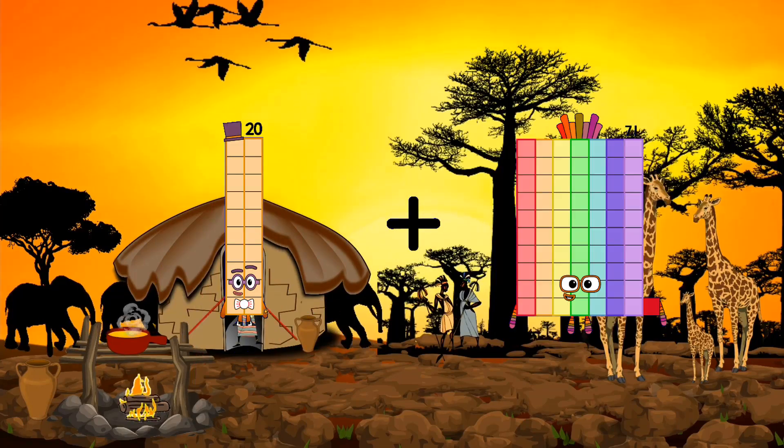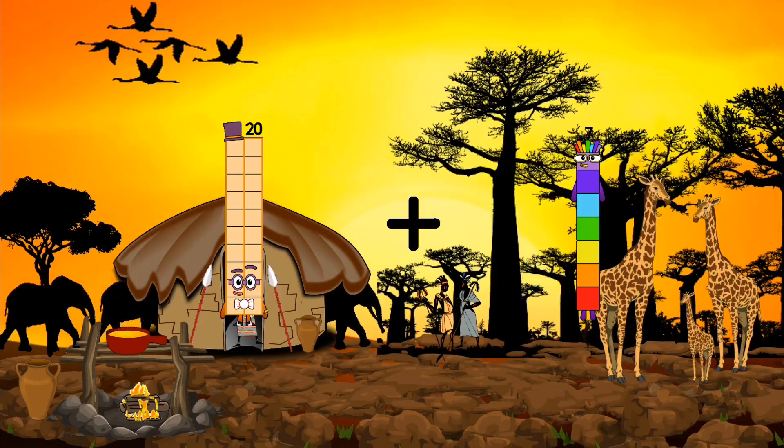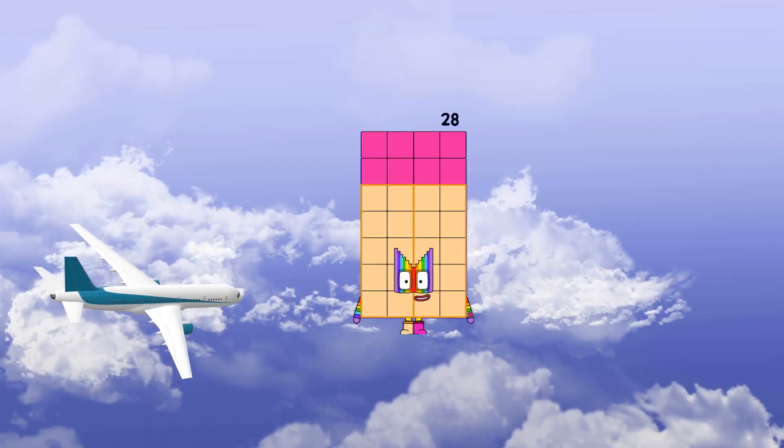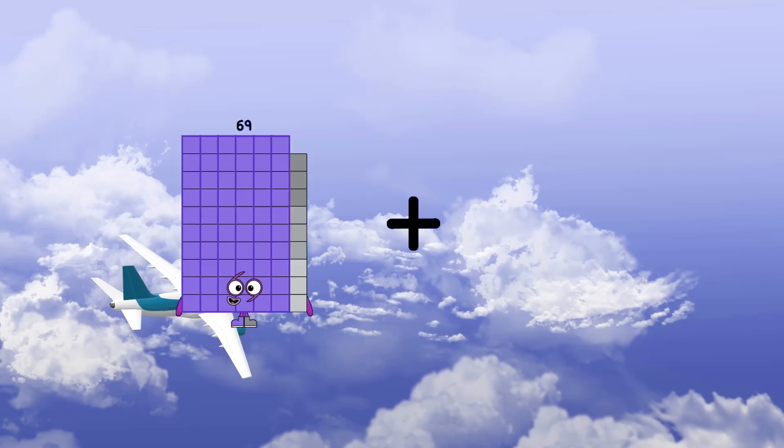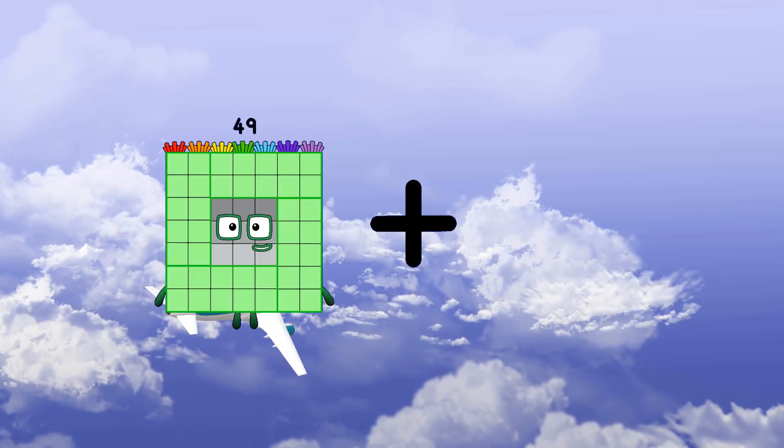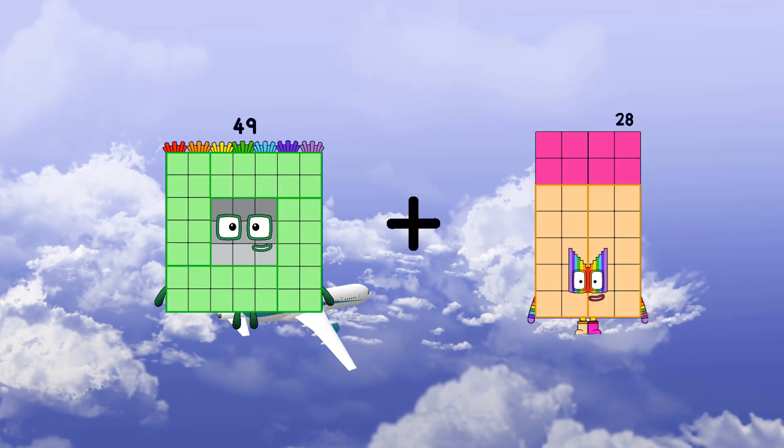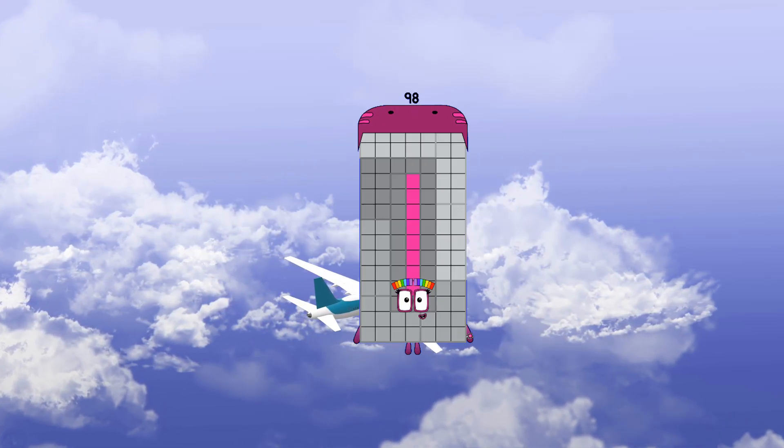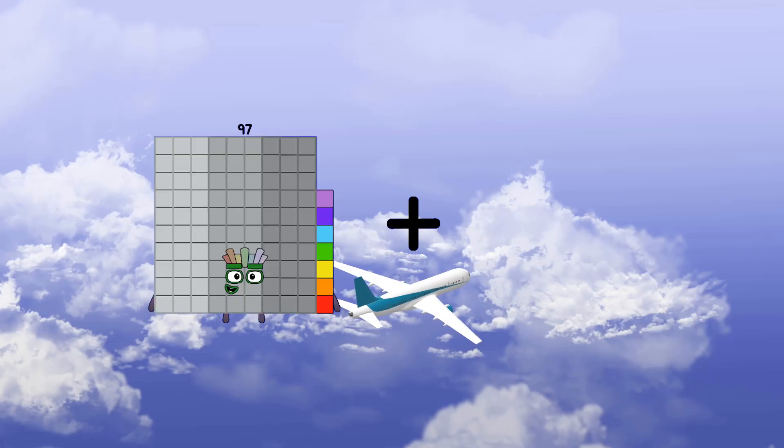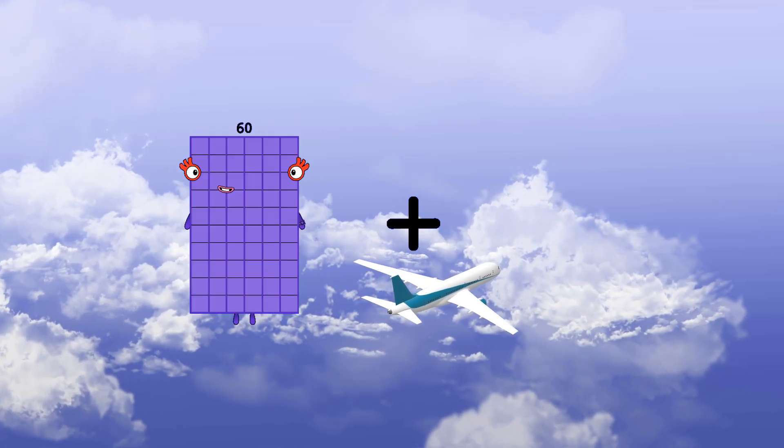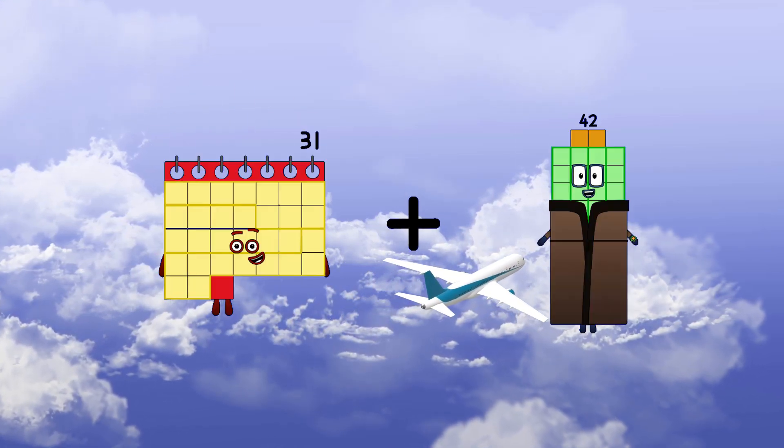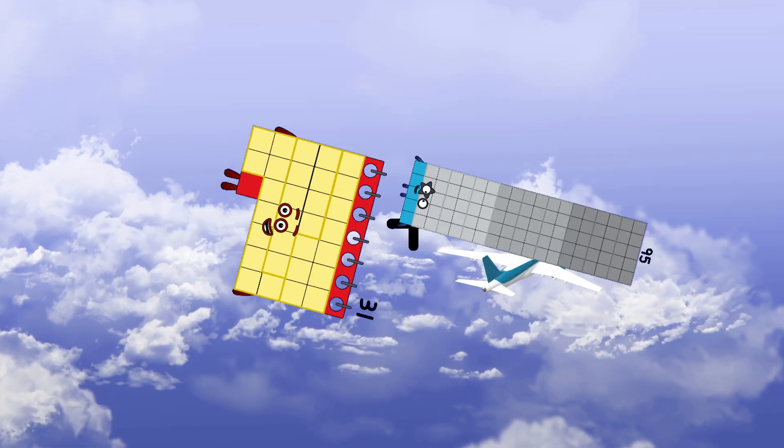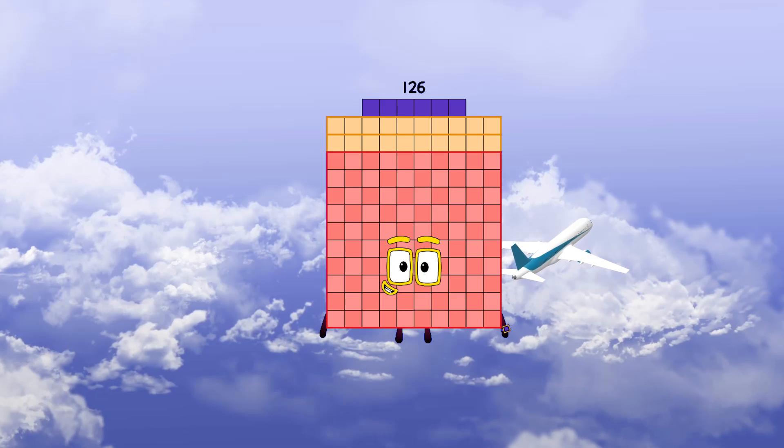20 plus 8 equals 28. 49 plus 49 equals 98. 31 plus 95 equals 126.